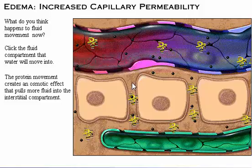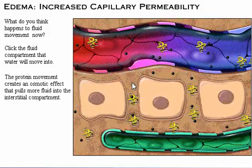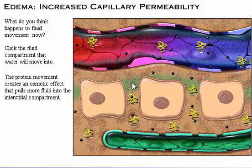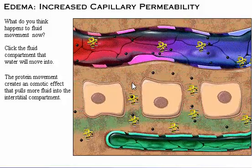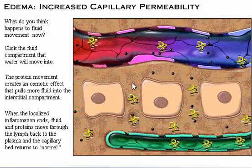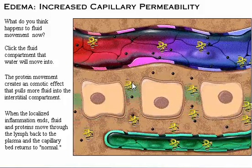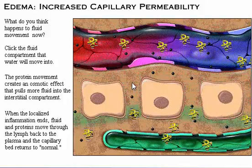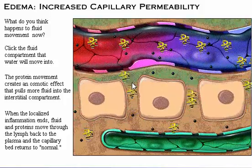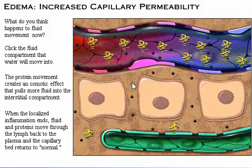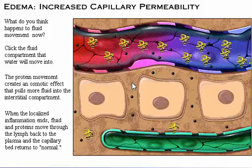The protein in the plasma will be removed. When the localized inflammation ends, fluid and proteins move through the lymph, back to the plasma, and the capillary bed returns to normal.